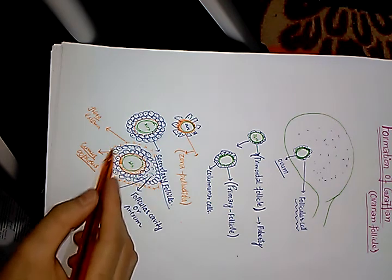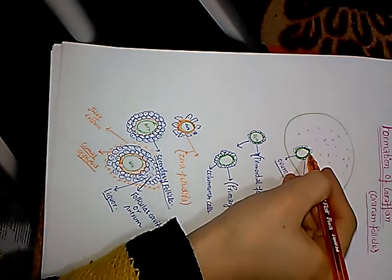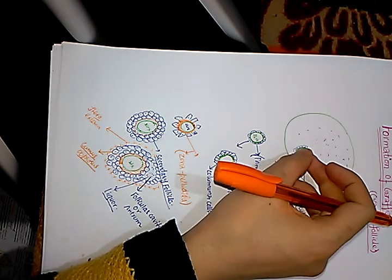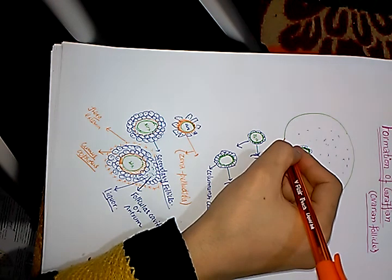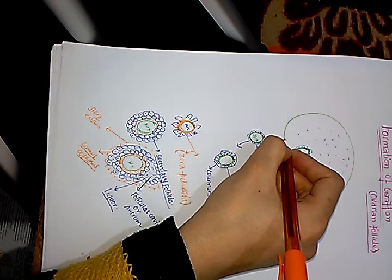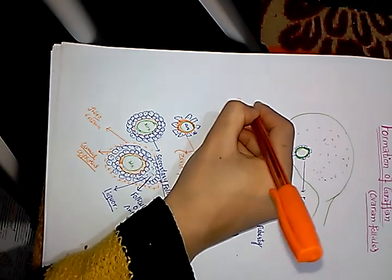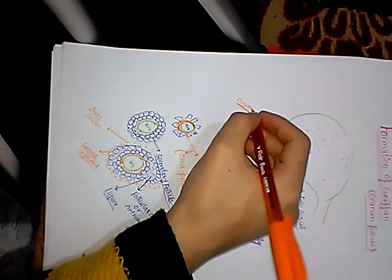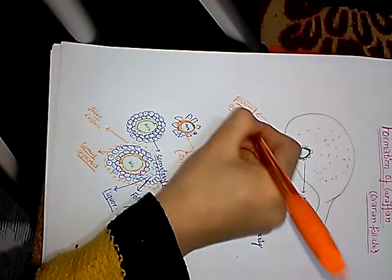At first the follicle is very small, but as it develops and the cavity gets bigger and bigger, the follicle ultimately touches the surface of the ovary. It becomes thin because of the pressure, and that very surface where it touches and becomes thin is called the stigma. Through this stigma, the ovum gets released. The process of release of the ovum from the ovarian follicle is called ovulation. We will discuss the fertilization process in our next lecture.